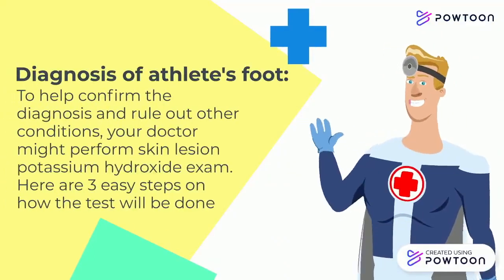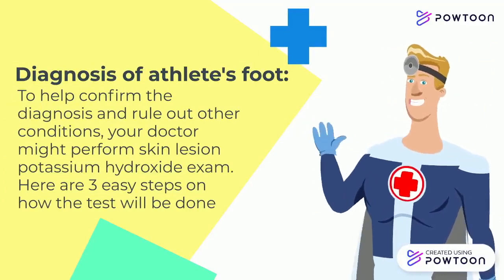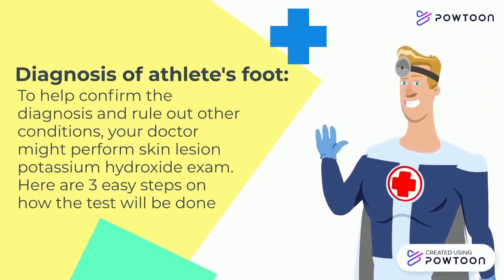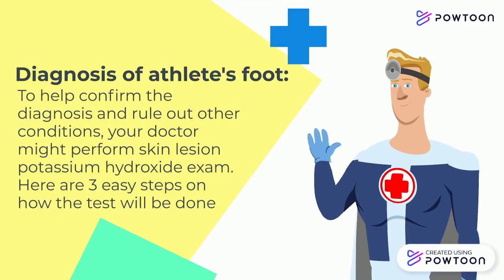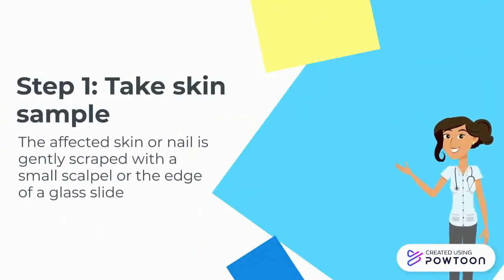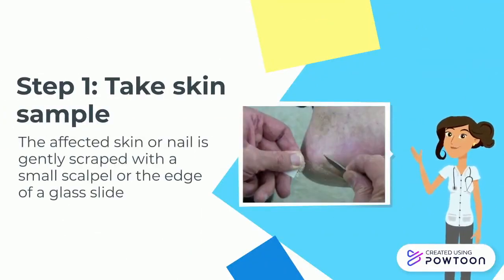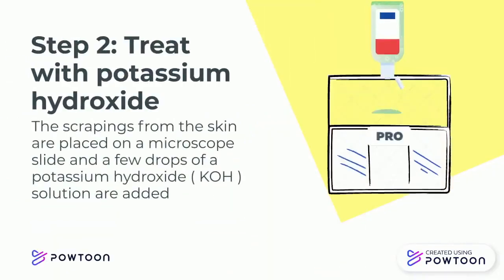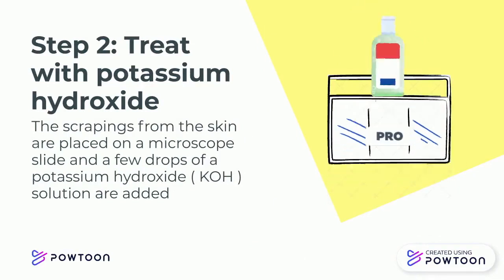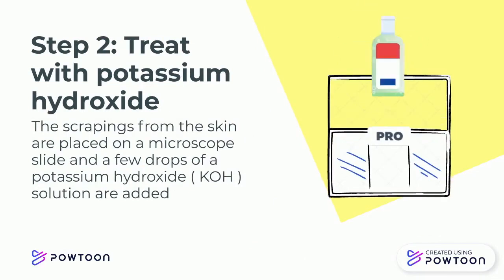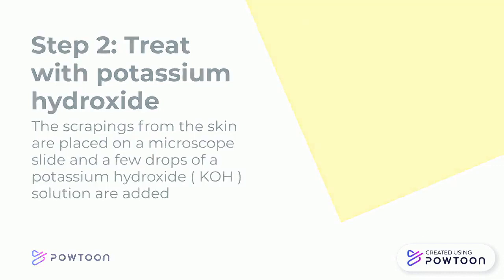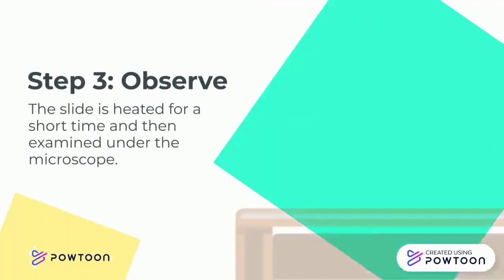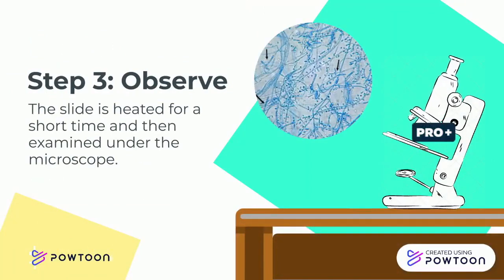Diagnosis of athlete's foot. To help confirm the diagnosis and rule out other conditions, your doctor might perform a skin lesion potassium hydroxide exam. Step 1: Take a skin sample — the affected skin or nail is gently scraped with a small scalpel or the edge of a glass slide. Step 2: Treat with potassium hydroxide — the scrapings are placed on a microscope slide and a few drops of potassium hydroxide solution are added. Step 3: Observe — the slide is heated for a short time and then examined under the microscope.